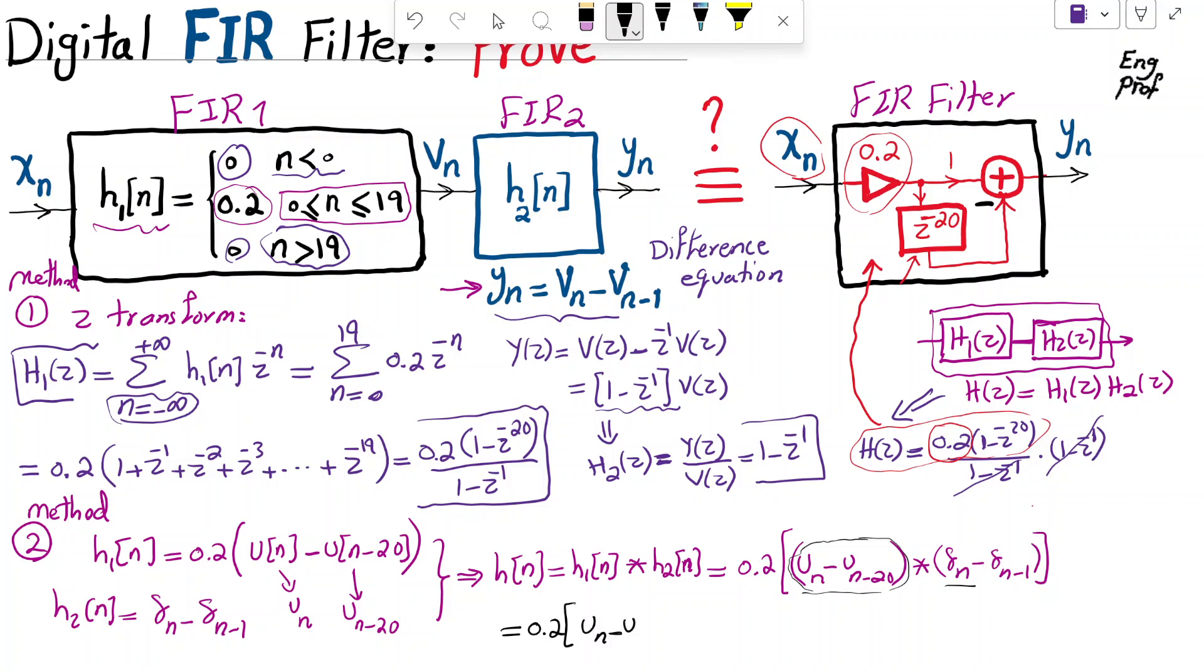The rest of it is super easy. So the rest of it is as simple as 0.2, keep it outside. U of N minus U of N minus 20 convolved with delta N means itself. Nothing will change.